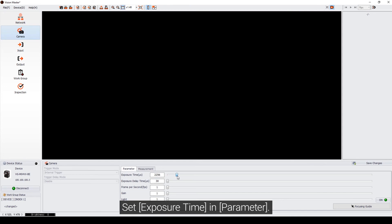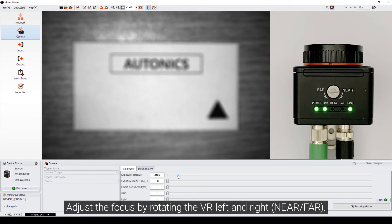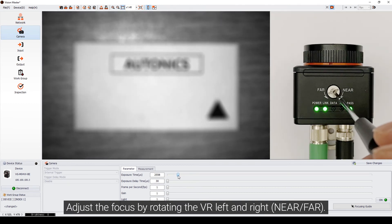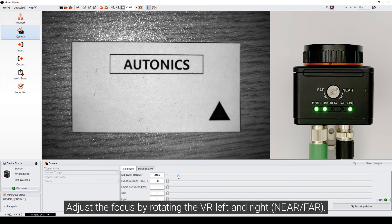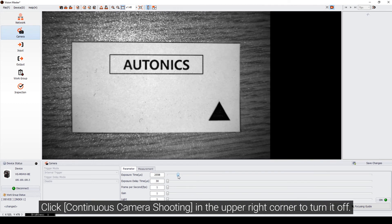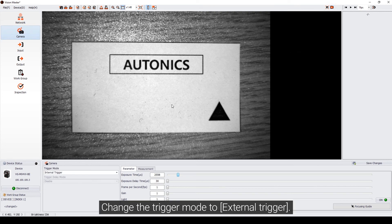Check the trigger mode. Adjust the focus by rotating the VR left and right. Click Continuous camera shooting in the upper right corner to turn it off. Change the trigger mode to External trigger.